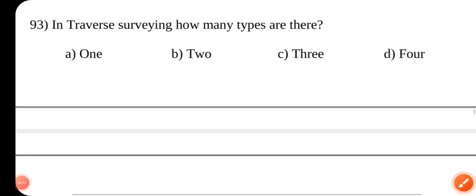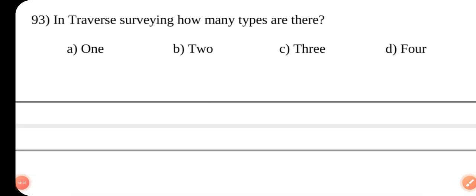Question number 93. In traverse surveying, how many types are there? Answer is B 2.